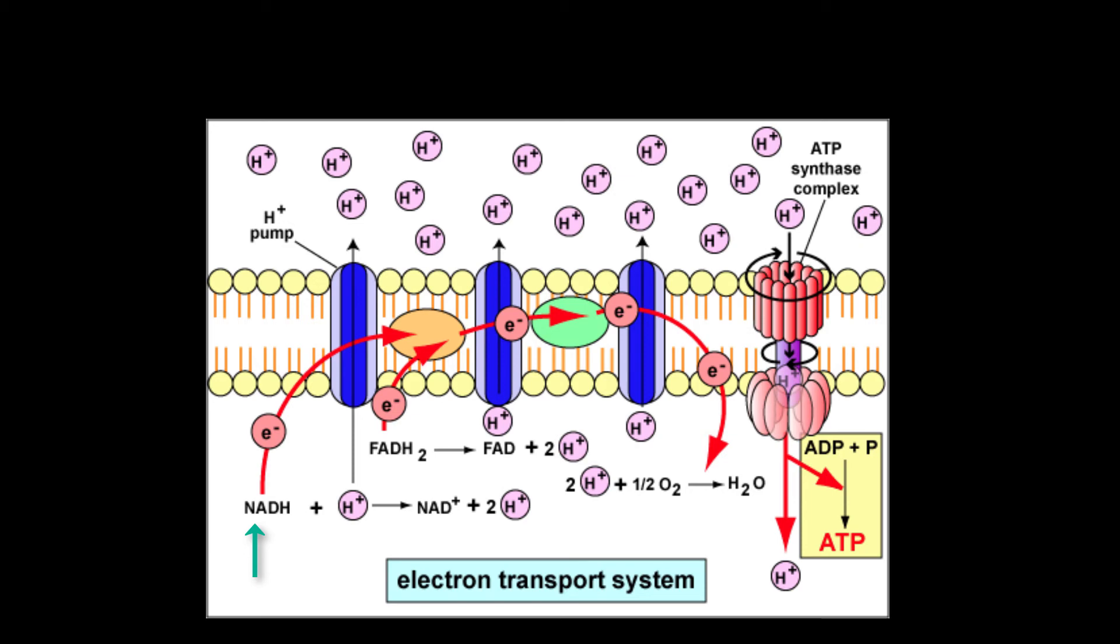For each NADH that enters the electron transport chain, 3 ATP will be produced. For each FADH2 that enters the electron transport chain, 2 ATP will be produced. Because FADH2 drops its electrons off farther down the chain, a smaller hydrogen ion concentration gradient is built, so less ATP is produced.